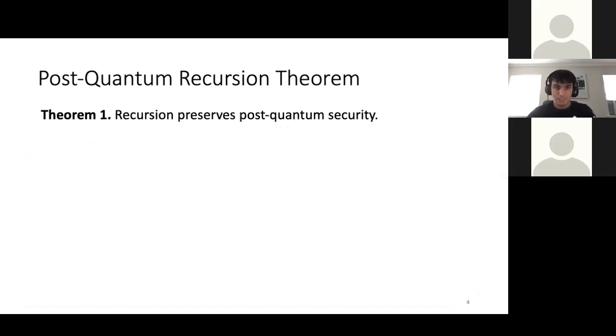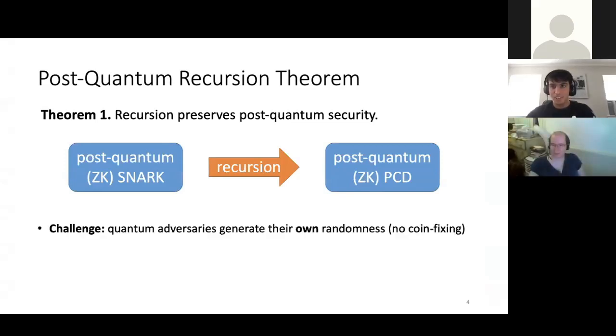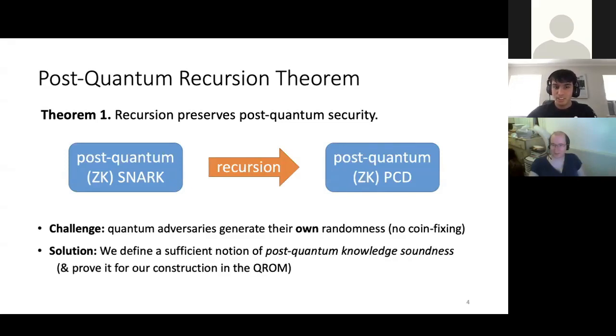So this is the first result of our work. Yes, recursion will preserve post-quantum security. You start with a post-quantum snark, and you recurse it, you'll get post-quantum PCD. And this is not a direct, straightforward thing from BCCT. One of the problems is that your quantum adversary can create its own randomness. So in the classical setting, suppose you had a probabilistic adversary. What you can do is you can sort of fix its randomness and make it deterministic. Essentially, you set a seed for its randomness and derive everything from that. But in the quantum setting, you can't do this. So the solution is to define a sufficient notion of post-quantum knowledge soundness and to prove it secure for our construction in the quantum random oracle model.